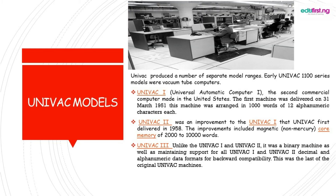Now let's look at some of the models in UNIVAC. UNIVAC produced a number of separate models. The early models were the 1100 series, which were composed of vacuum tube computers. The first is UNIVAC 1, the Universal Automatic Computer 1. This UNIVAC 1 is the second commercial computer in the United States. It was the first machine delivered on 31st March 1951, and this machine handled 1000 words of 12 alphanumeric characters. UNIVAC 1 was composed of vacuum tubes.